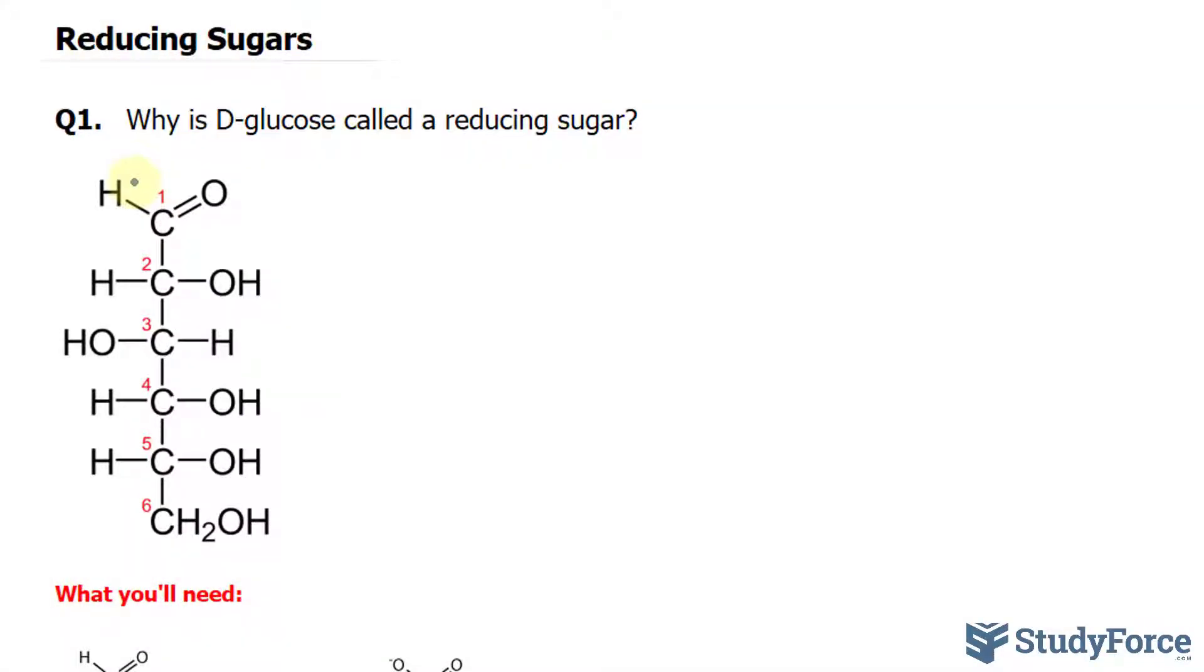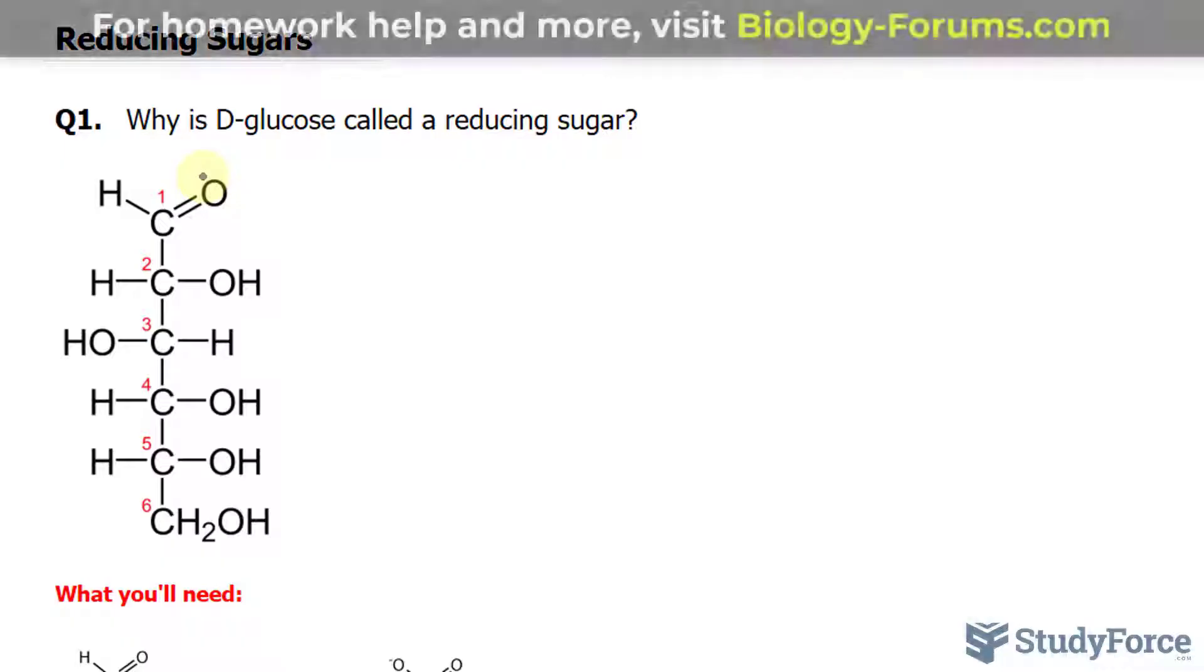The Fisher model for D-glucose is shown right here. As you can see, glucose consists of one, two, three, four, five, six carbons, so it's a hexose.